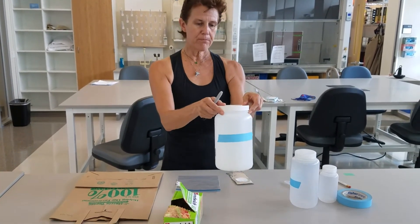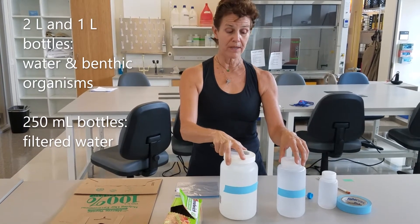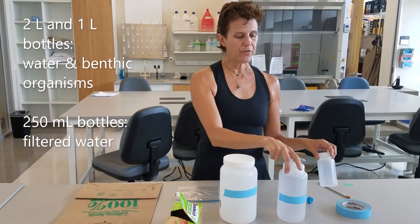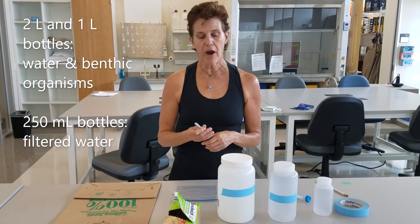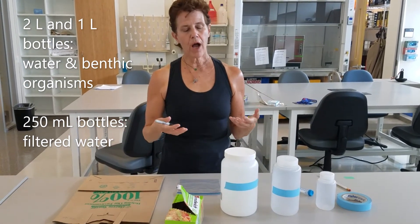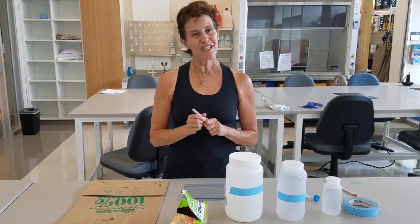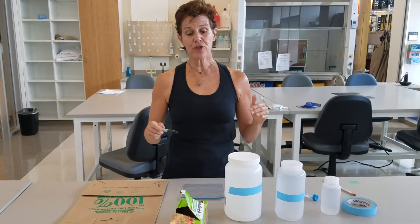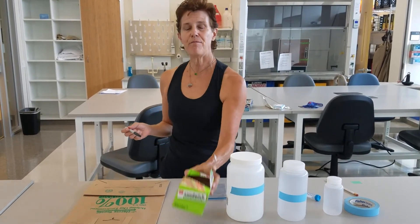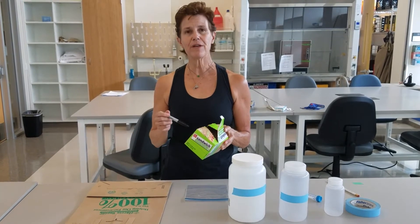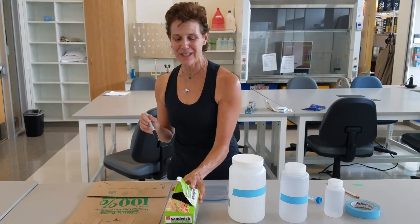We use two-liter bottles and one-liter bottles for collection of water and benthic organisms, and we filter from these bottles into 250-milliliter bottles for water. It's very important that you label properly, because an unlabeled bottle is an unknown bottle — and it happens to the best researchers. The best way to do this is to label before you go out into the field. Taking bags out into the wetland and having to wet-label them for soil samples while you're in the wetland is not a good idea — you really need to pre-do it.